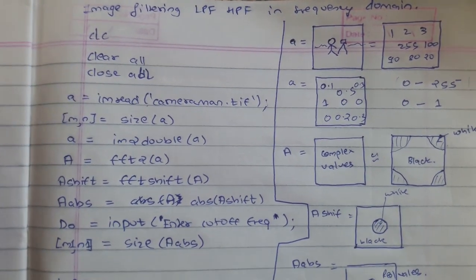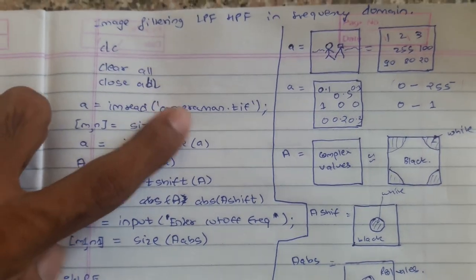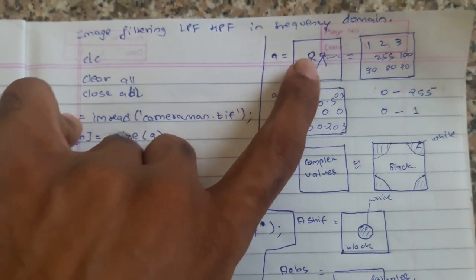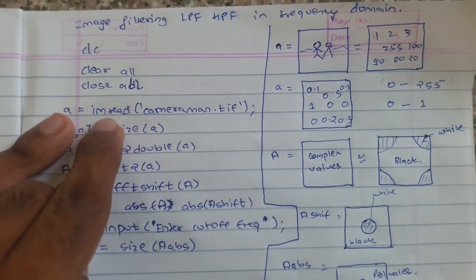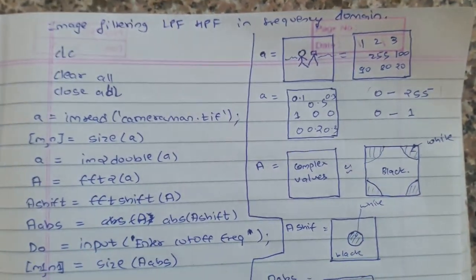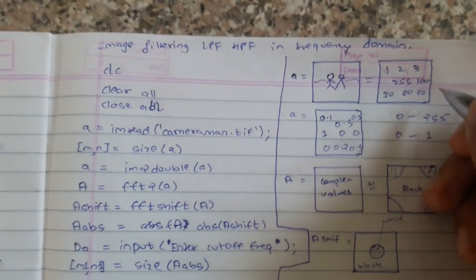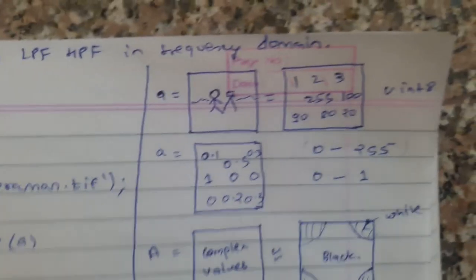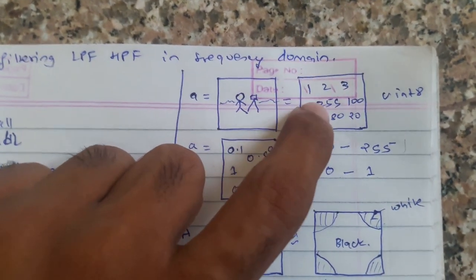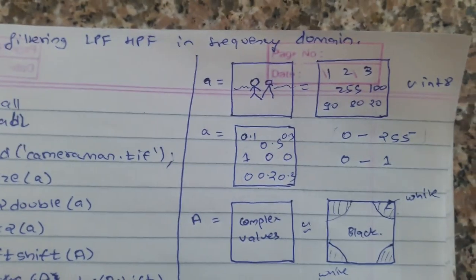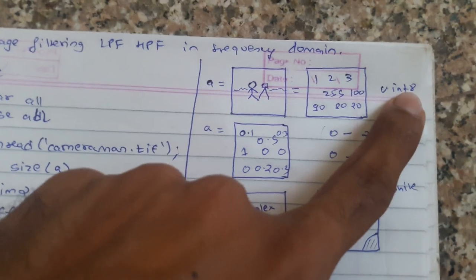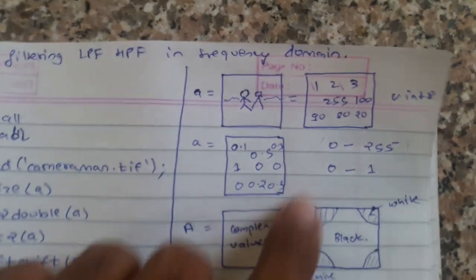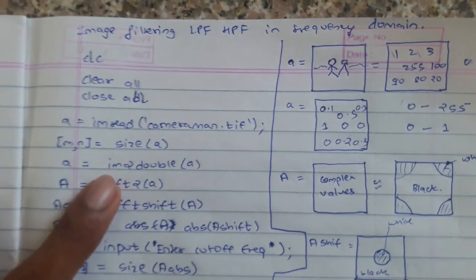This is CLC, clear all, close. Now, A is equal to imread cameraman.tif. So there will be this cameraman image that will be loaded in variable A. When you take imread, this is basically a uint8 variable. It will have values 1, 2, 3, 255, 100 like this. They will range from 0 to 255 and they will be all integers. There will be no floating points — no 0.5, 0.3, nothing. So this will be uint8.